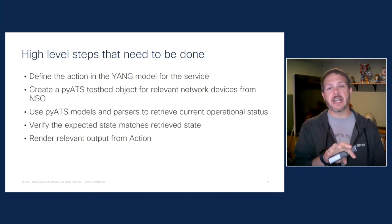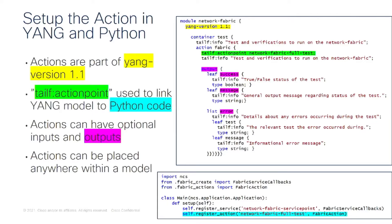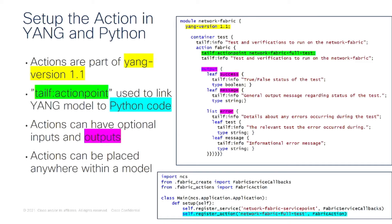First up is the manipulation of our Yang model. Actions are part of Yang version 1.1, and you have to explicitly state that your module is using Yang version 1.1 — otherwise it'll revert back to 1.0 and the standard action doesn't exist. Just like we had service points for creating our service creation code, we have the TALF action point that links the Yang model down to the actual Python code where we register the action using the same name from the module. Each action can have optional inputs and outputs. I have three outputs to this action: a basic success flag (true or false), a simple message that indicates the overall status of my test, and a list of potential errors that happened during the execution.